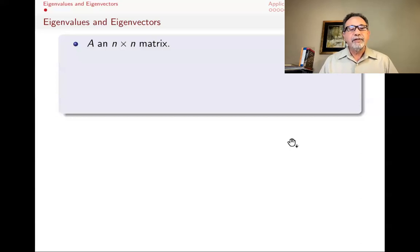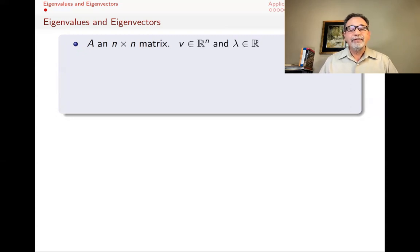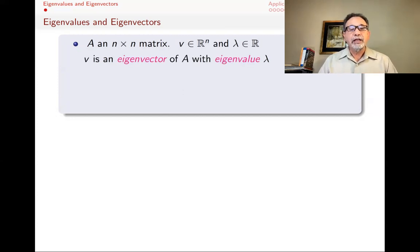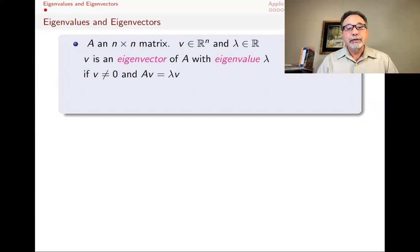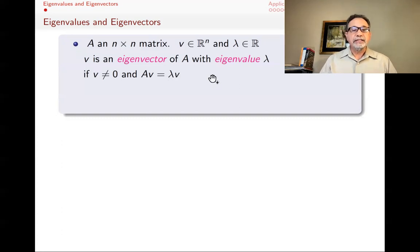Let me remind you quickly what eigenvalues and eigenvectors are and the main idea of diagonalization, although there are previous videos that go into much more detail that you should be looking at before watching this video. If A is an n by n matrix, and if you have a vector V in Rn — a column vector — and lambda is a scalar, then we say that V is an eigenvector of A with eigenvalue lambda if V is not the zero vector, and also that when you multiply A by V, you get lambda times V. Lambda is the eigenvalue — that scaling factor — and V is the eigenvector.